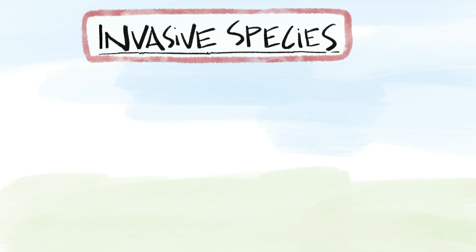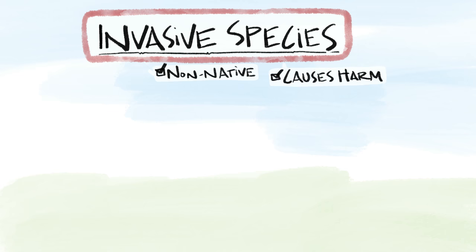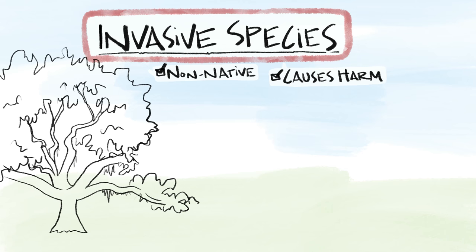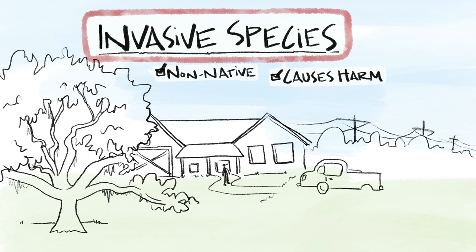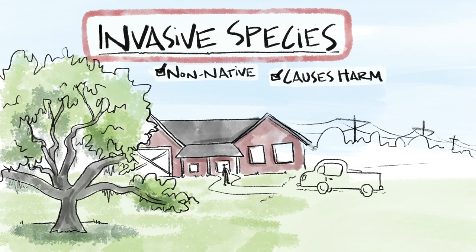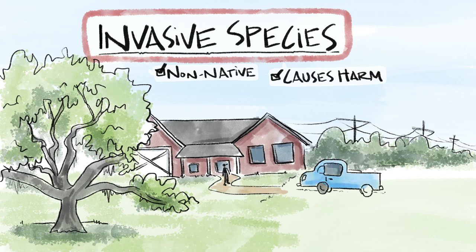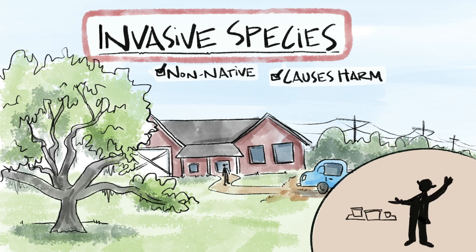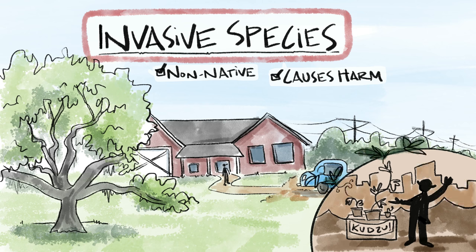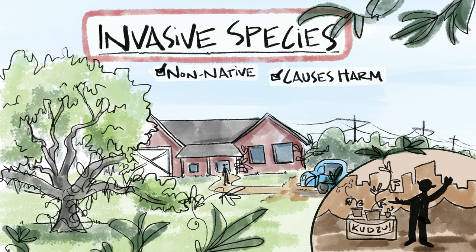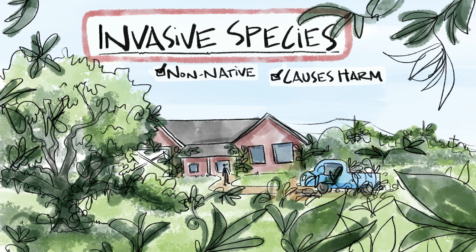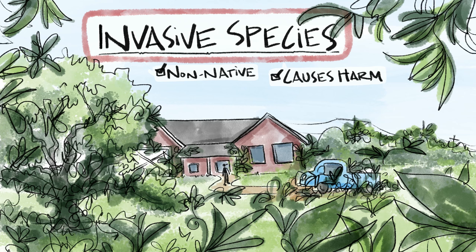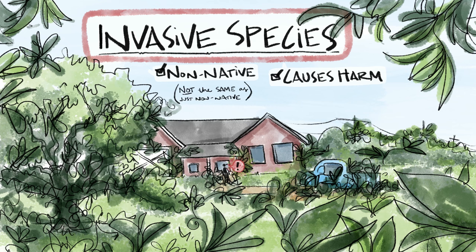Now it's finally time to explore invasive species. Invasive species are non-native species that cause harm to the environment, cultural resources, infrastructure, economy, human safety and health, as well as plant and animal health. One example is kudzu. Kudzu was introduced to the United States in 1876 at an exposition in Philadelphia. It can grow up to a foot a day, allowing it to easily out-compete and kill other plants. It even grows over power lines and poles, causing damage that results in the loss of power to communities.